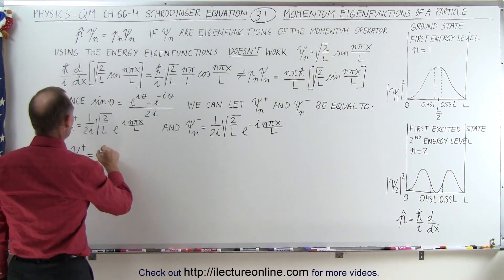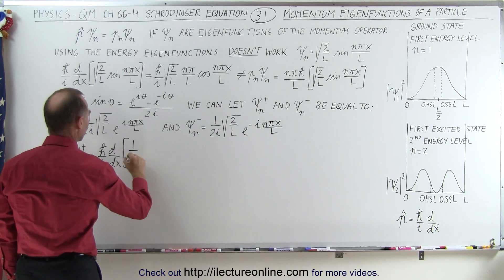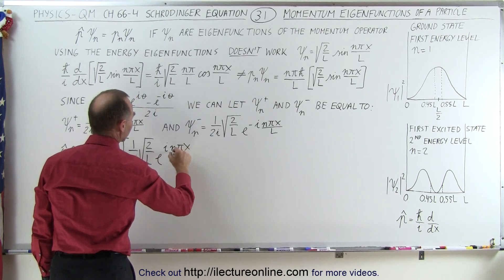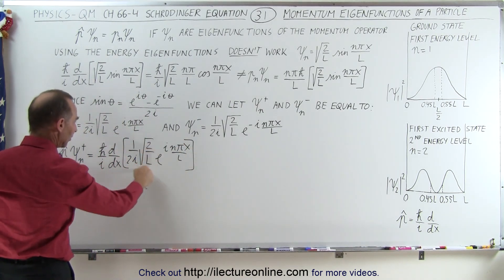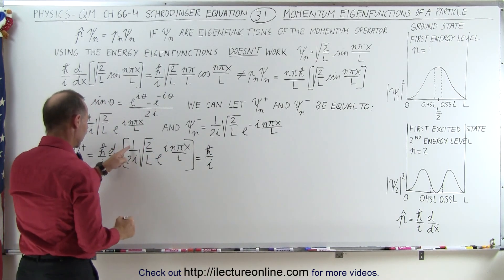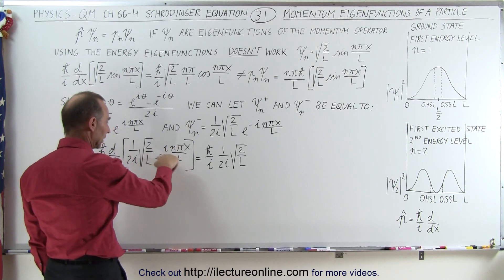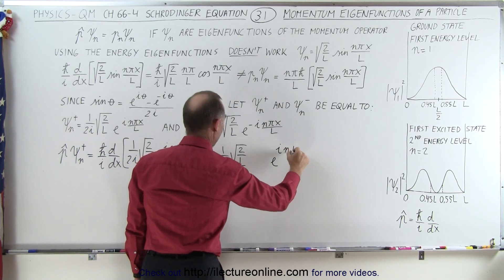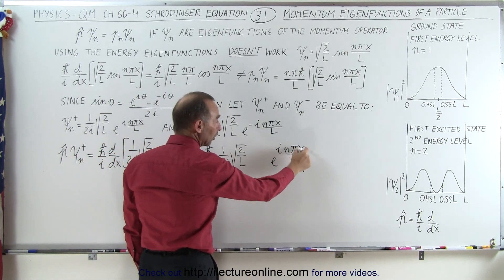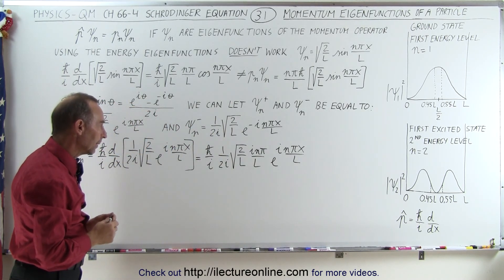This is going to be equal to h-bar over i times the derivative of the presumed eigenfunction: 1 over 2i times the square root of 2 over L times e to the i times n pi x over L. That constant can come out front, so this equals h-bar over i times 1 over 2i times the square root of 2 over L. When we take the derivative, we get e to the i n pi x over L, since the derivative of an exponential is the same exponential times the derivative of the exponent — that would be i n pi over L.